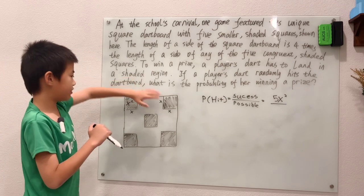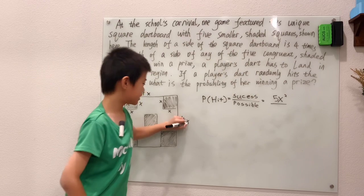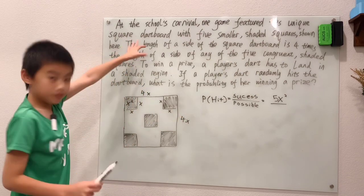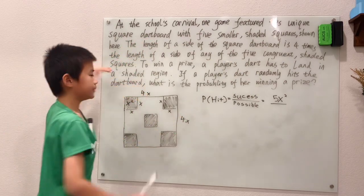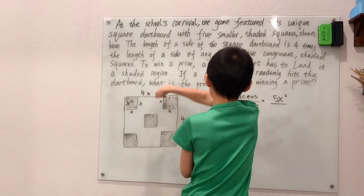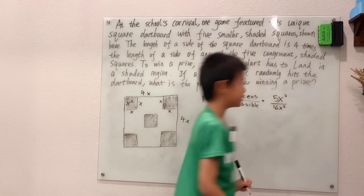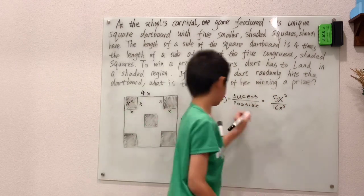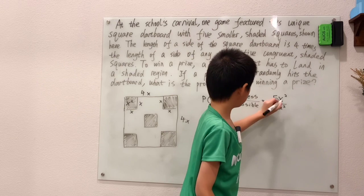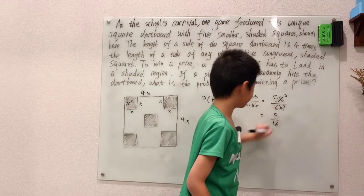Each one of the large side lengths is just 4x. Read this problem carefully. This is a square, meaning these two side lengths are equal. Meaning just square 4x, which is 16x squared. We can just cancel these, and we have five over 16.